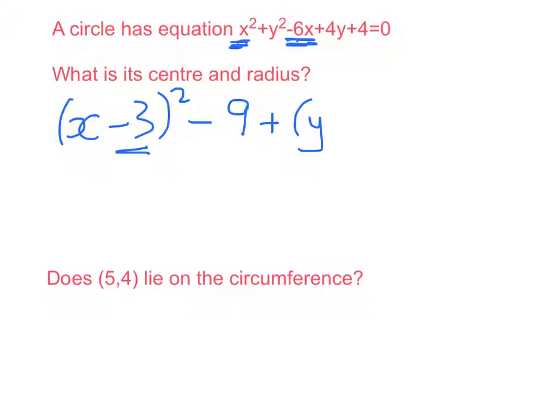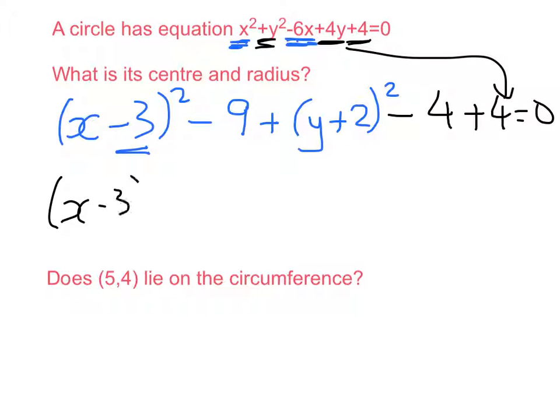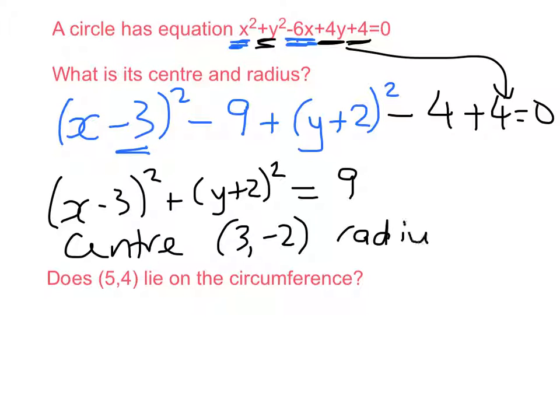Same thing for the y part, y plus 2 squared. So that's this bit here, but I've added in 4, so I need to take 4 out. And then I've just got my plus 4 from here. So cleaning that up, we get x minus 3 squared plus y plus 2 squared equals 9. So the centre is at 3, negative 2, and the radius is the square root of 9, which is 3.